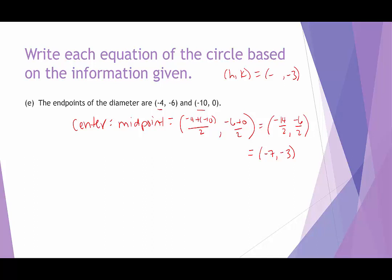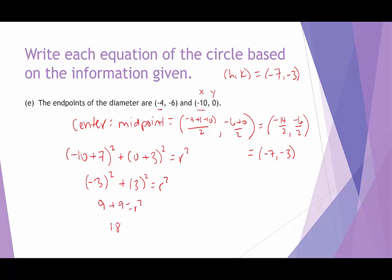Now we use one of the endpoints to find r squared. Using negative 10, 0 as x, y: negative 10 minus negative 7 is negative 3, squared, plus 0 minus negative 3 is 3, squared, equals r squared. Negative 3 squared and 3 squared both equal 9, so 9 plus 9 gives r squared equals 18. The equation of the circle is x plus 7 squared plus y plus 3 squared equals 18.